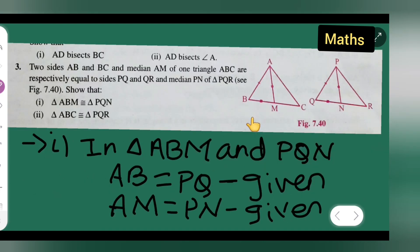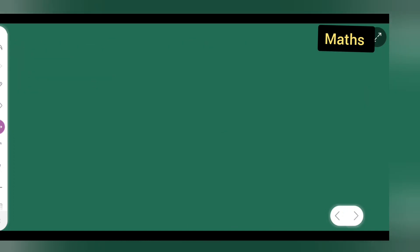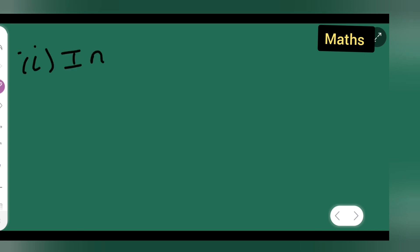We have proved Part 1. Now for Part 2, we have to prove that triangle ABC is congruent to triangle PQR. So let us start proving that. Writing: in triangle ABC and triangle PQR.